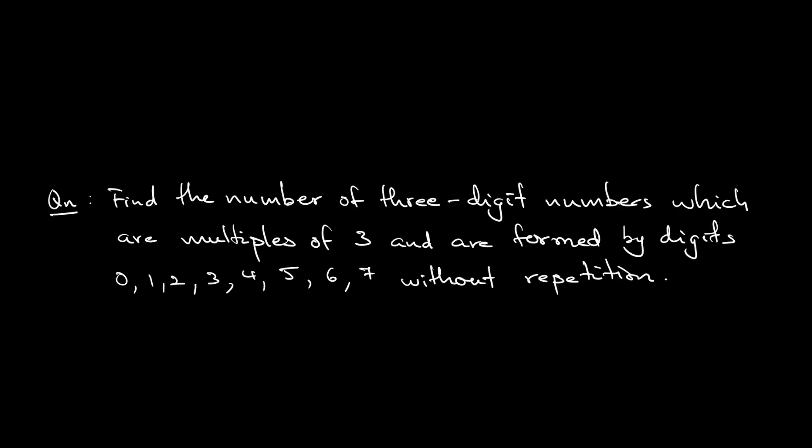Let's read the question together. The question asks you to find the number of three-digit integers which are multiples of 3 and are formed by digits 0, 1, 2, 3, 4, 5, 6, 7 without repetition. So the question asks how many such integers are there?